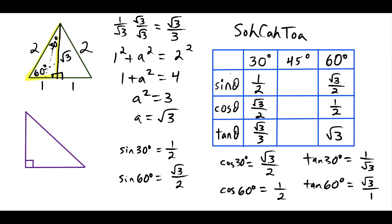There's a useful identity: tangent theta equals sine theta over cosine theta. You could have also found tangent of 30 by dividing one half by root 3 over 2, and tangent of 60 by dividing root 3 over 2 by one half to get root 3. Whichever method works best for you, go with that.